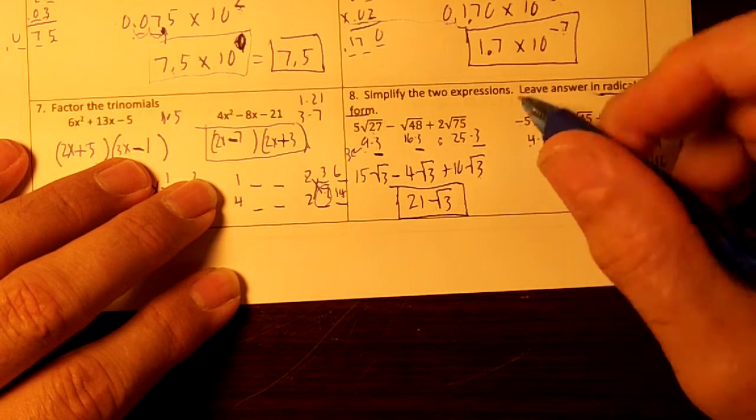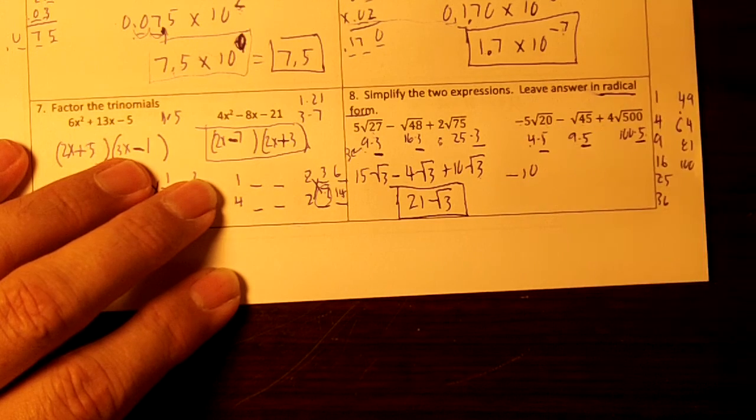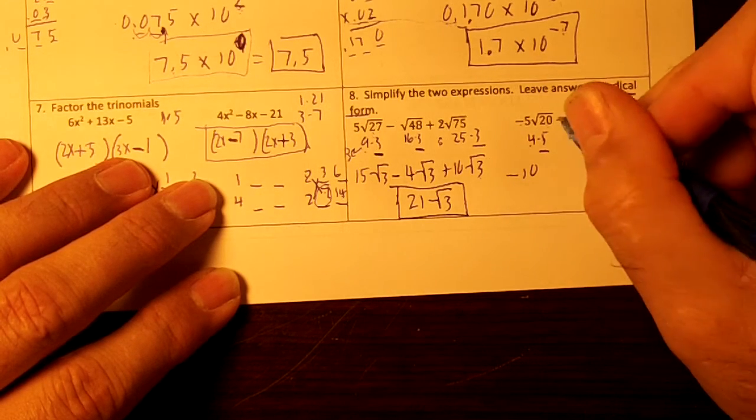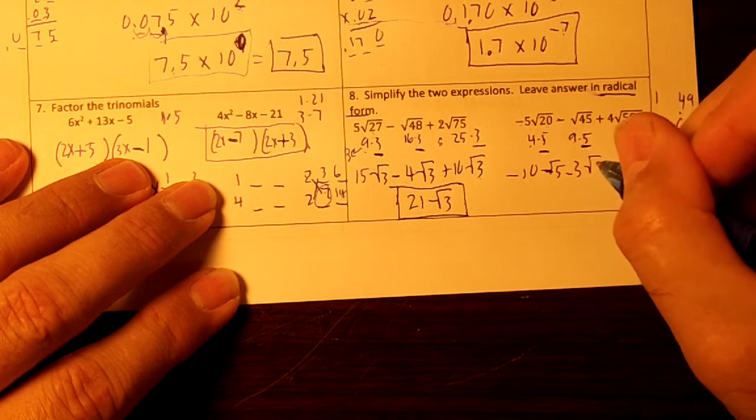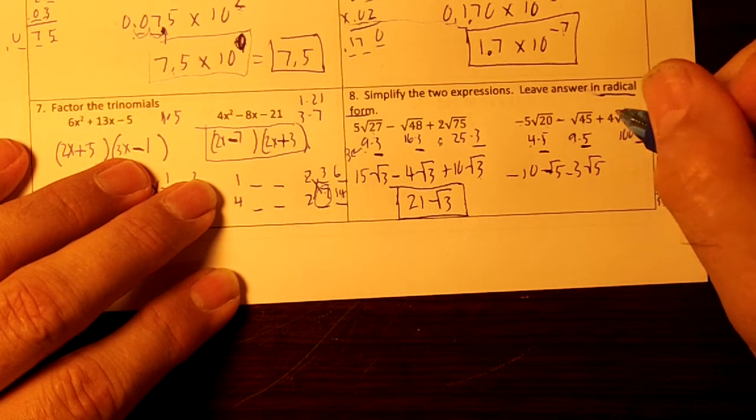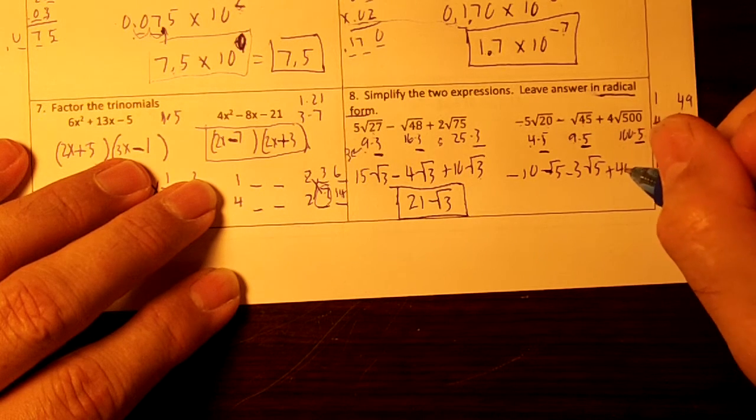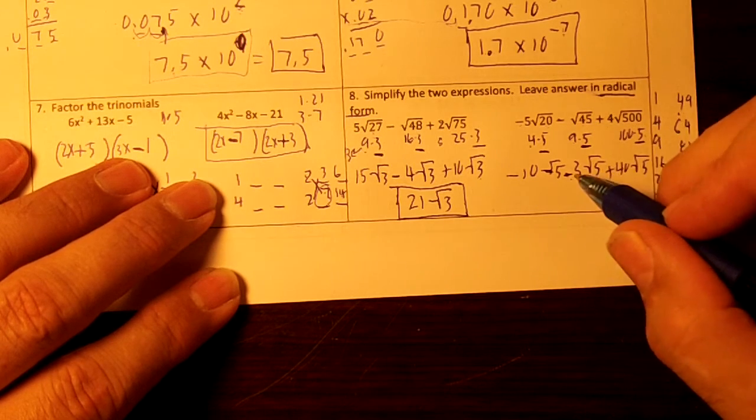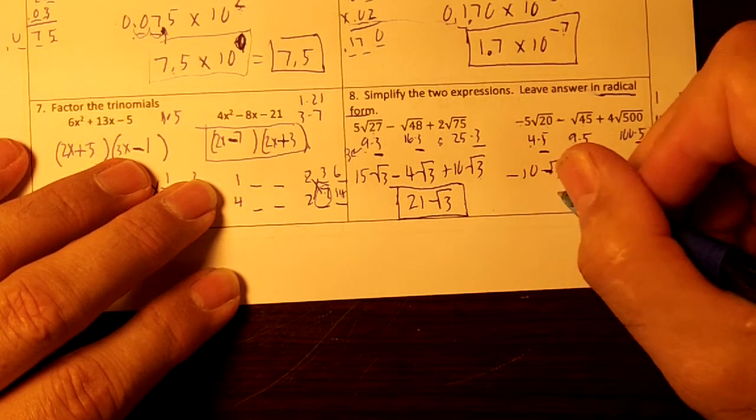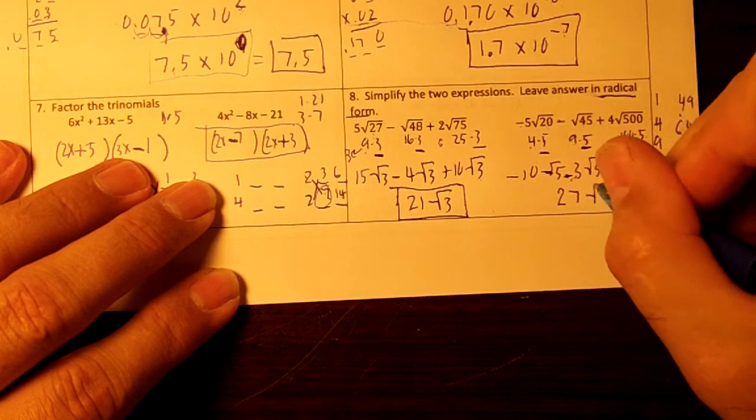The square root of 4 is 2. And 2 times negative 5 is negative 10. The square root of 9 is 3. 3 times a negative is square root of 5. Negative 3, square root of 5. And then the square root of 100 is 10. And 10 times 4 is 40, square root of 5.